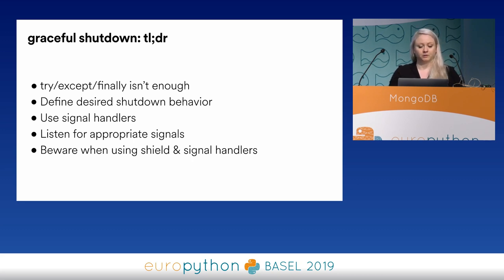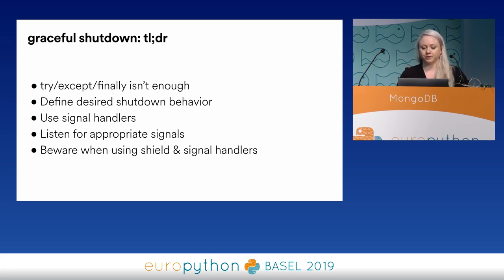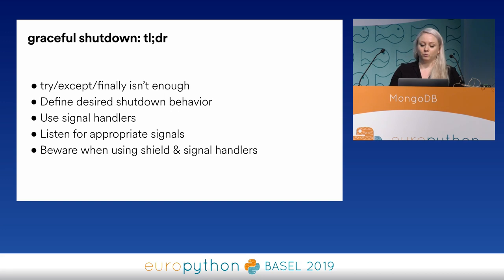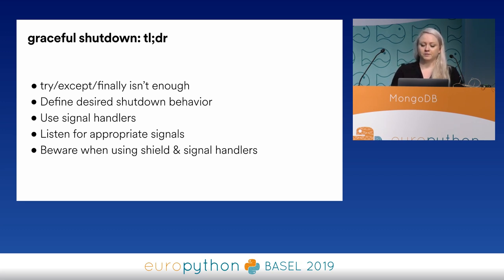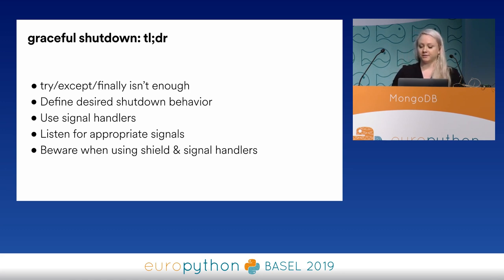Doing our cleanup in the finally clause isn't enough, since a signal could be sent outside of the try-except clause. So as we construct our loop, we should tell how the loop should be deconstructed as soon as possible to ensure all our bases are covered. We also want to be aware of when our program could be shut down, which is closely tied to how we run our program. If it's a manual script, SIGINT is fine. But if it's within a demonized Docker container, SIGTERM might be more appropriate. And finally, if you use shield in a service that has a signal handler, you should be aware of its funky behavior.